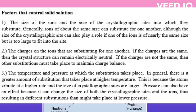The third factor is the temperature and pressure at which the substitution takes place. In general, there is a greater amount of substitution at higher temperature, because the atoms vibrate at a higher rate and the size of crystallographic sites are larger. Pressure can also have an effect because it can change the size of both the crystallographic sites and the ions, resulting in different substitutions at lower pressure.